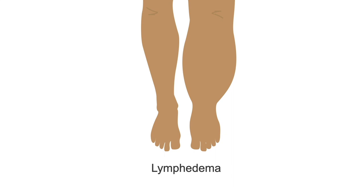At the very late stages of lymphedema, the skin can become fibrotic, thickened, and varicose, which means wart-like.